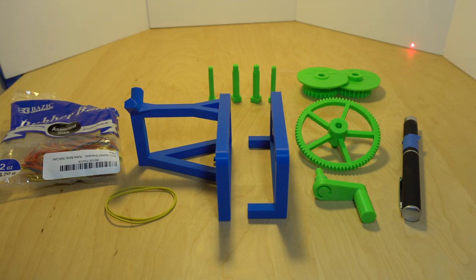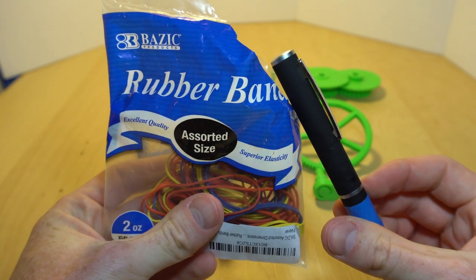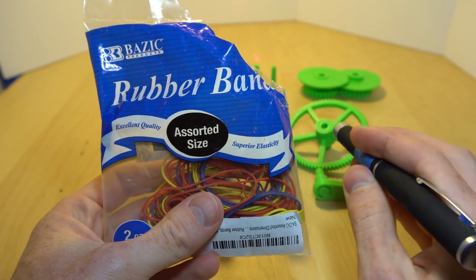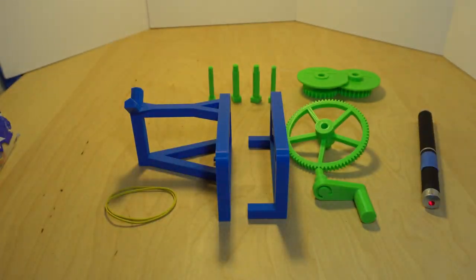Of course, in addition to printing all the parts, you have to purchase the laser and the rubber bands. Both of those I think I purchased for around $10 or less, and both of the ones I got I thought were pretty good, so I highly recommend them and I have linked them below.